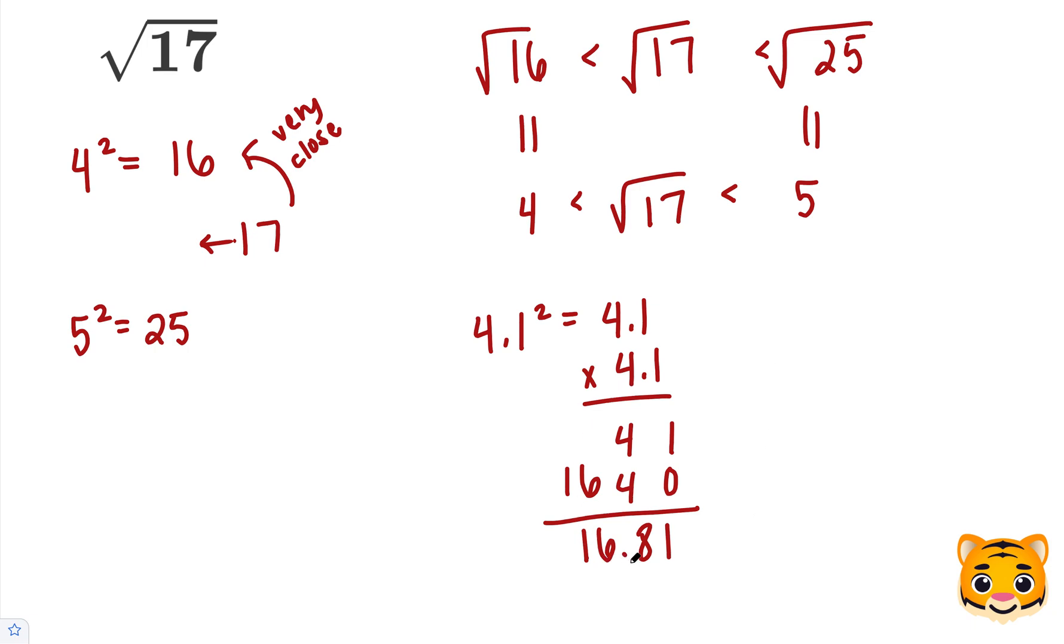So we can see that 16.81 is very close to 17. We can approximate it to 17 and say that 4.1 squared is approximately 17. Now if we take the square root of both sides, we can then cancel out the squared and the square root, and just get 4.1 is approximately the square root of 17.